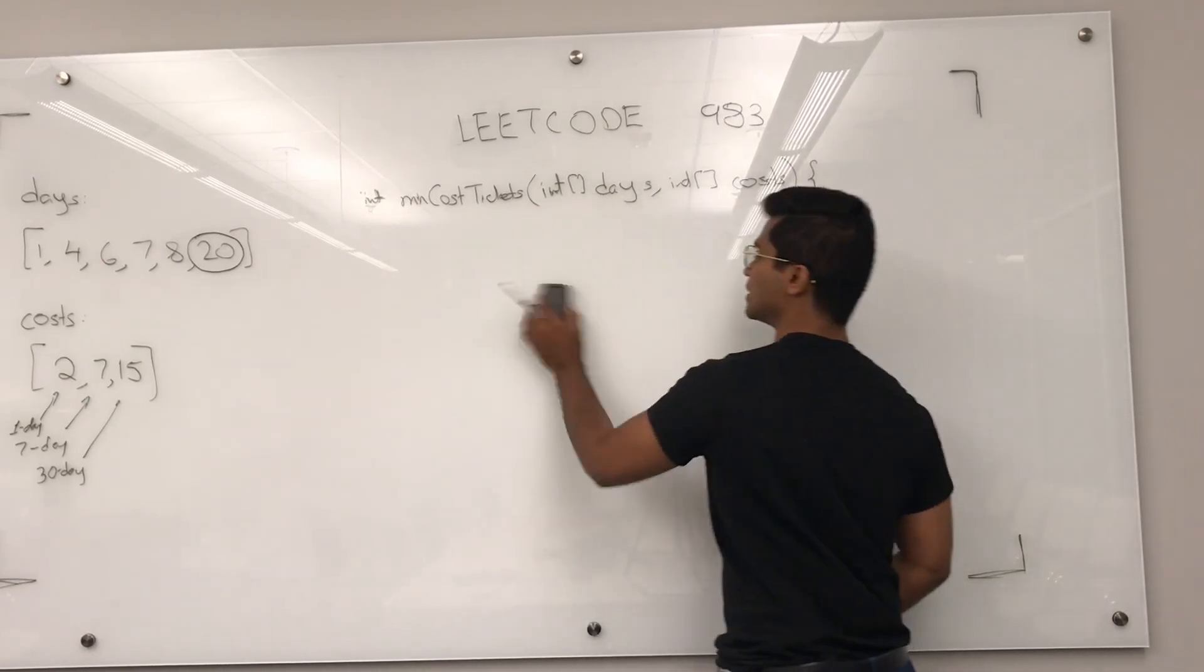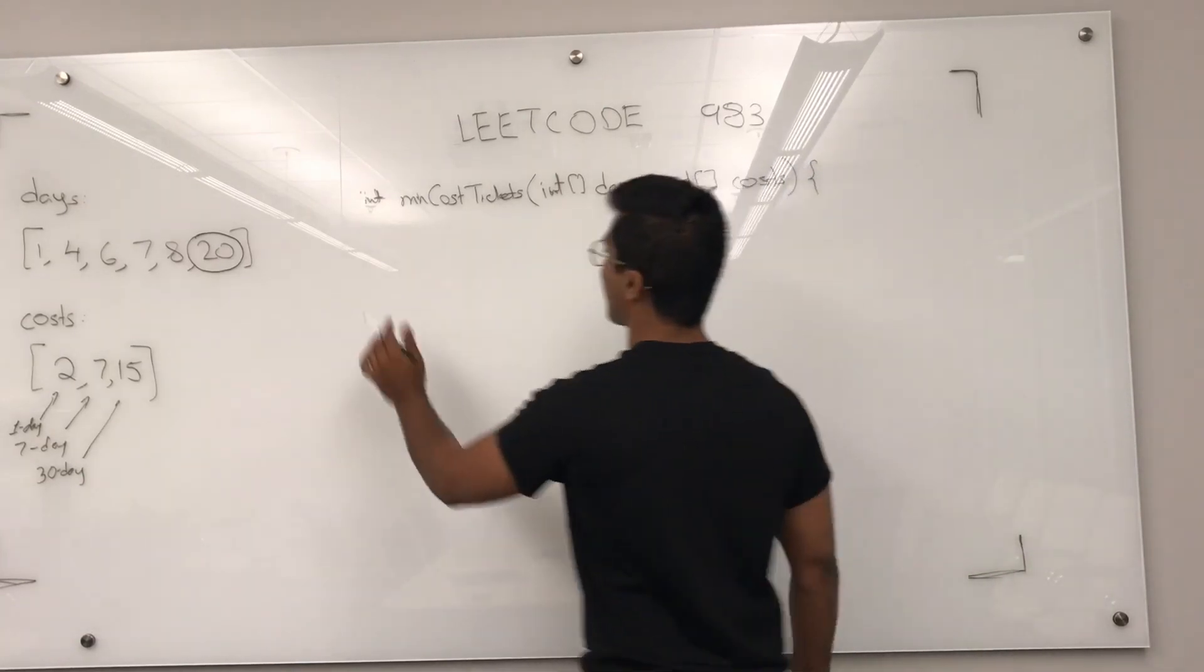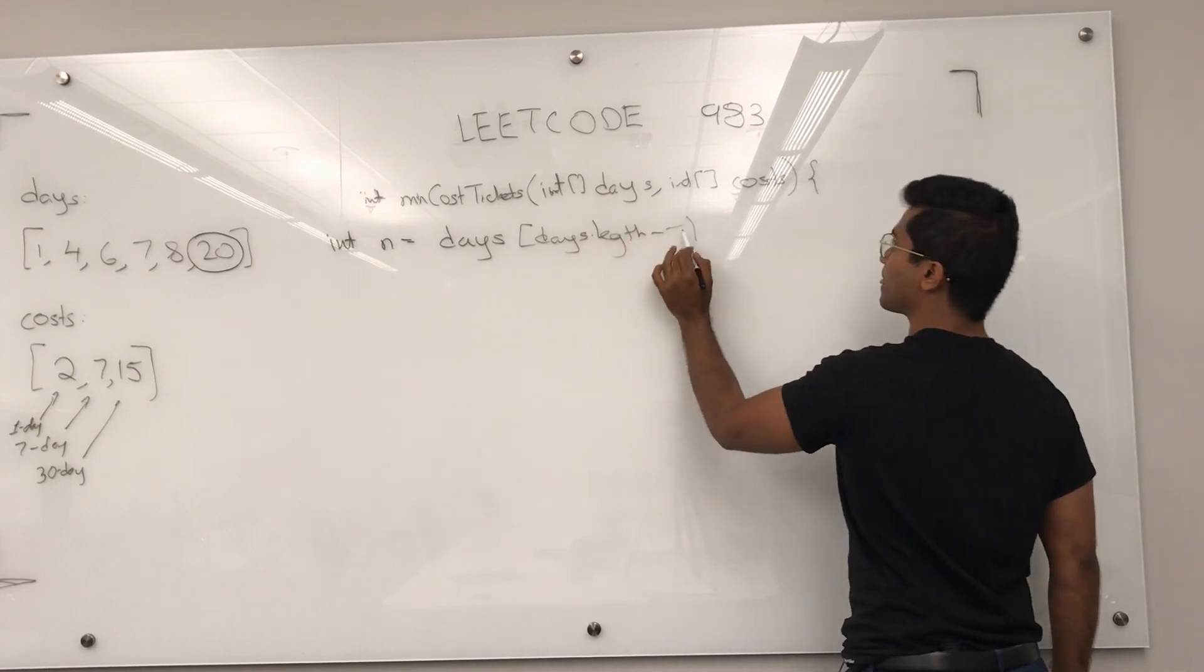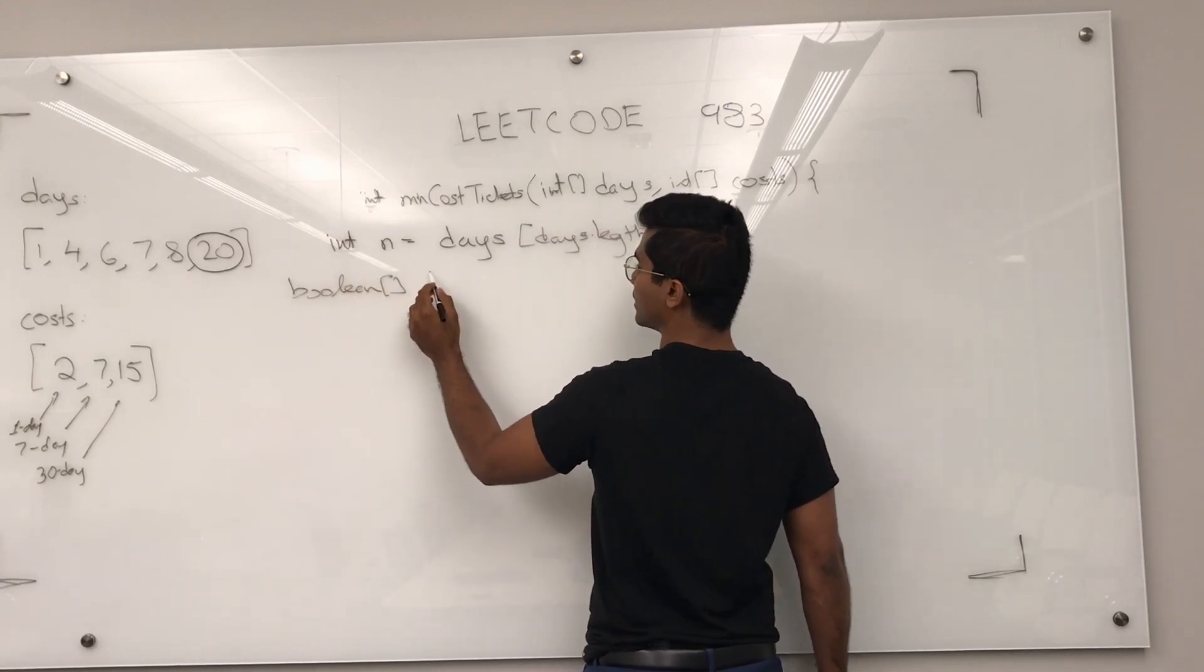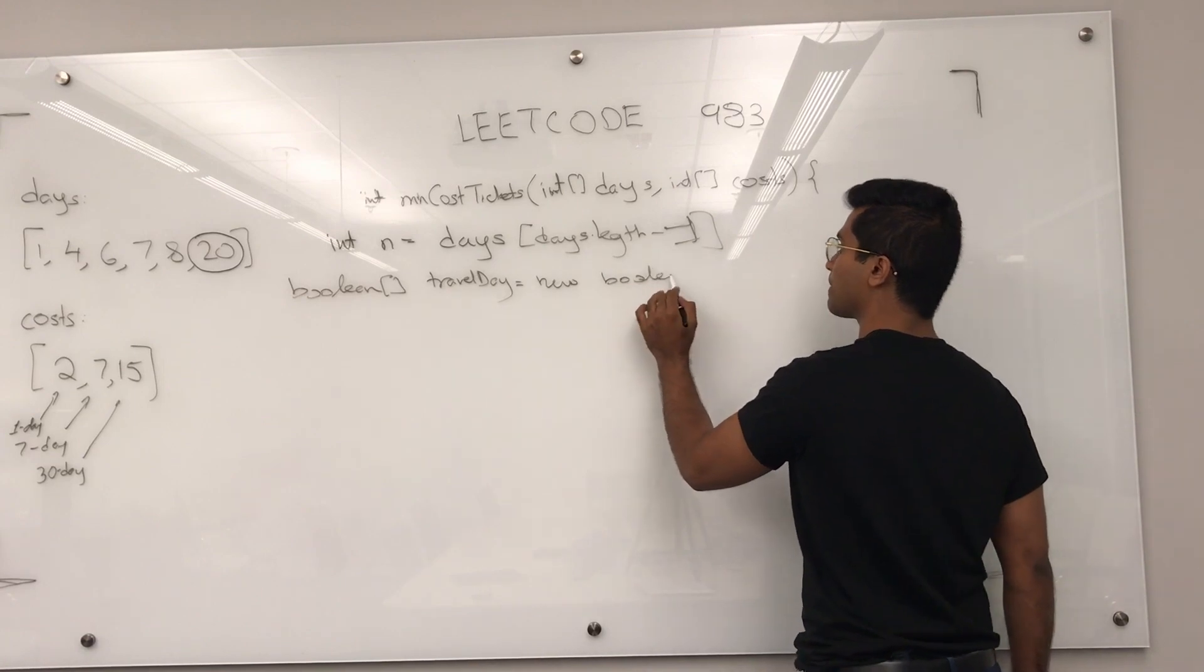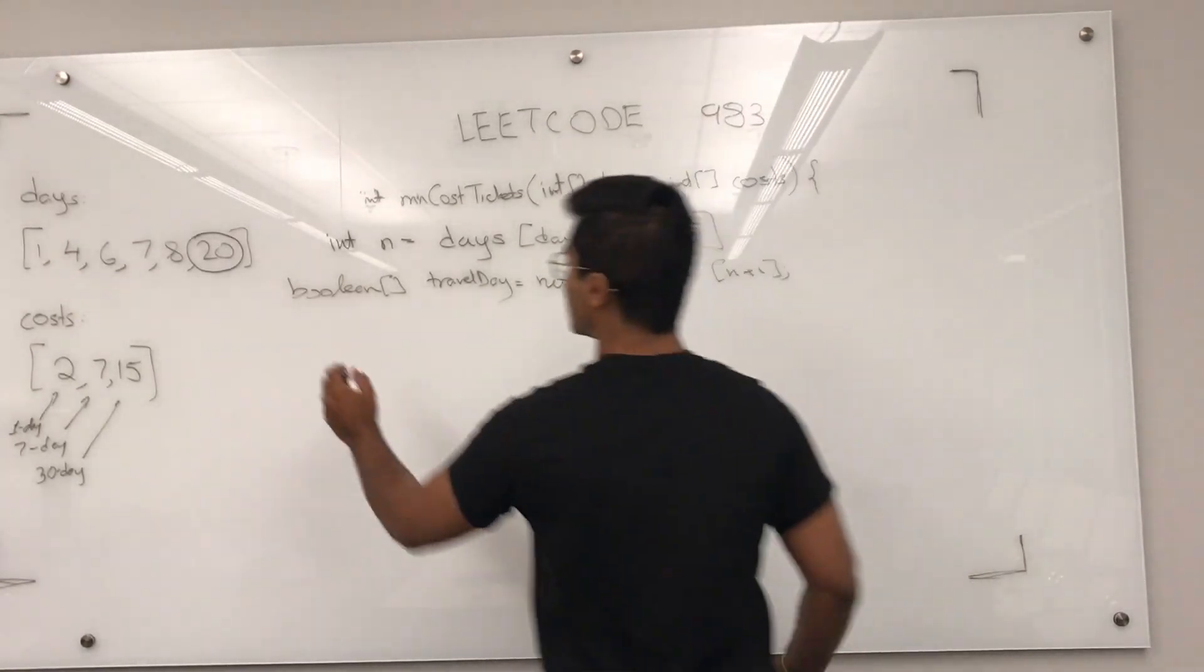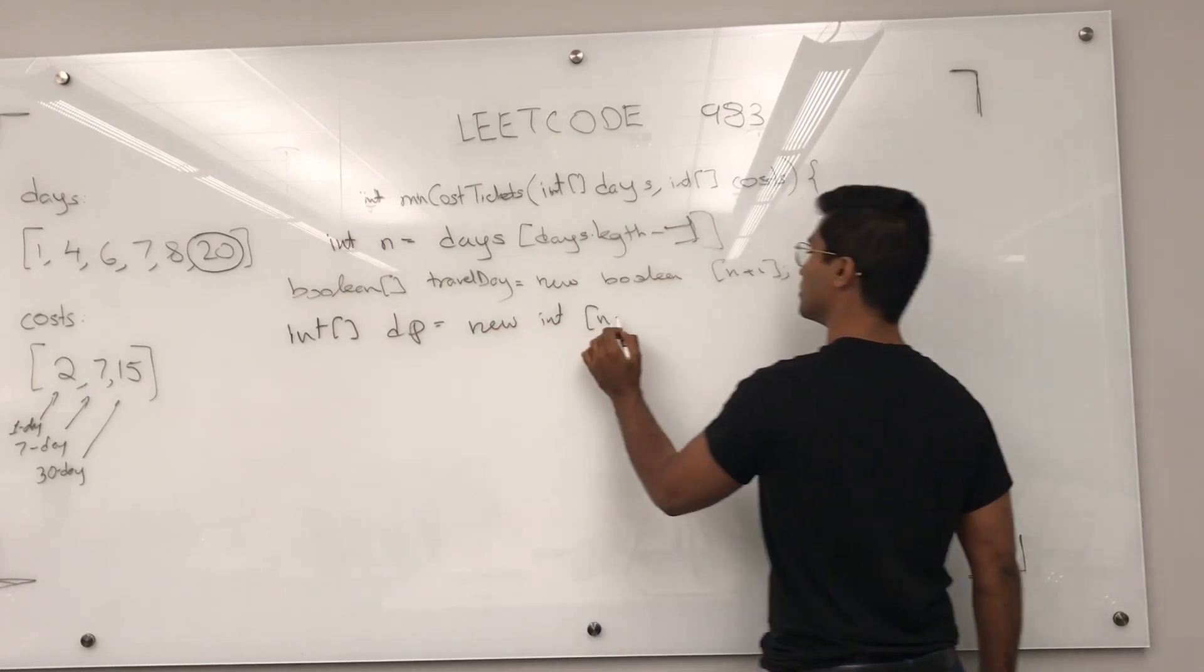Now, this solution is going to be using two arrays. One is going to be a boolean and one is going to be an integer. Let's write int n is equal to days of length minus one. And the boolean is going to look like boolean travel day, is going to be new boolean n plus one. Int is going to be the DP where we actually store the cost, new int n plus one.